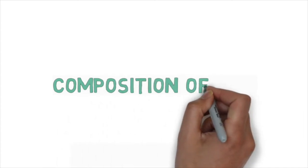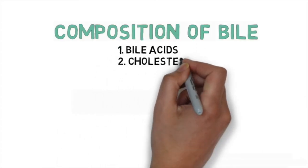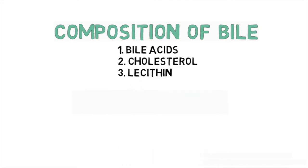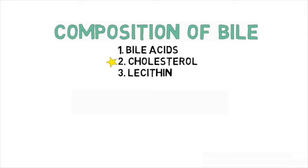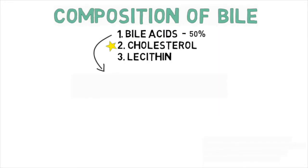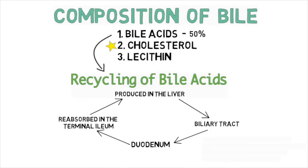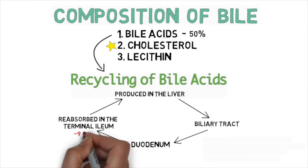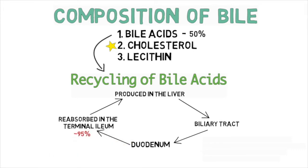Bile is made up of three components: bile acids, cholesterol, and lecithin. The concentration of these three needs to be just right to prevent gallstone formation. The main contributor to stone formation is cholesterol. For cholesterol to remain soluble, bile needs to consist of at least 50% bile acids and a small amount of lecithin. It's also important to note that bile acids get recycled — when bile is released into the duodenum, about 95% of bile acids are reabsorbed at the terminal ileum and returned to the liver.